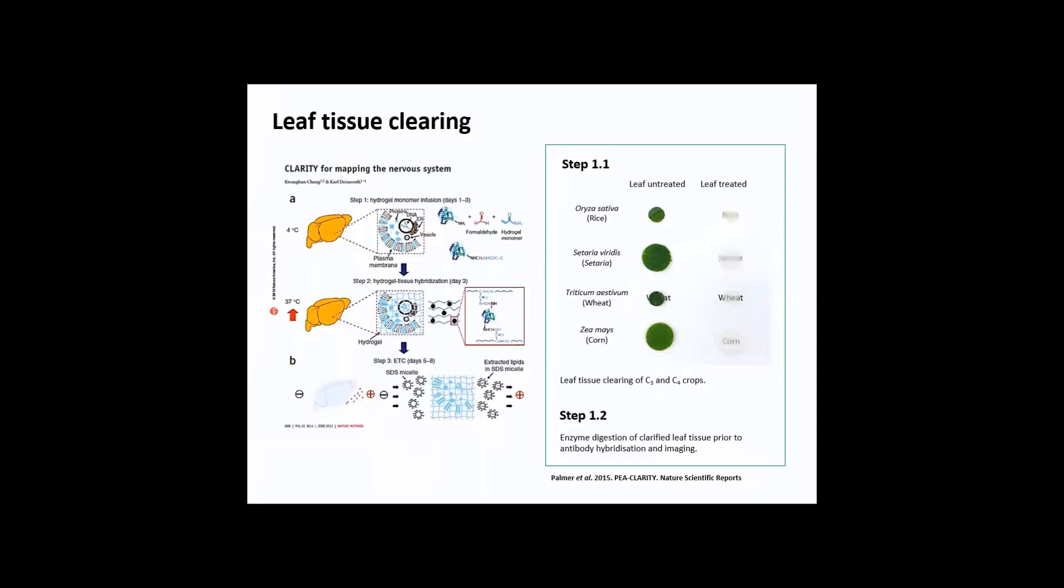The difference between plant cell and animal cell is the presence of an additional membrane, the cell wall. So as a modification to the original Clarity protocol, we added this enzyme digestion step, which makes the cell wall permeable to the antibody or stain we'll be using for the next step. Details for this modification method can be found in this P-Clarity paper published earlier this year.